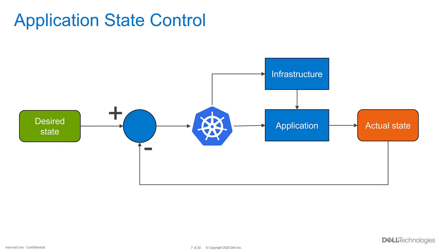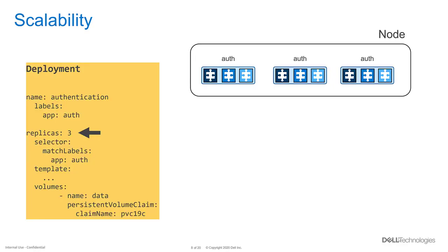Kubernetes follows a paradigm of automatic control of the state of a deployed application. It takes the required application deployment manifest as input and ensures the desired state of the application and underlying infrastructure are maintained using a feedback control loop — similar to an industrial process control system where sensors measure the state of a plant and provide feedback for corrective actions if there is any deviation. The desired state in Kubernetes is specified in a YAML manifest file using key-value pairs.